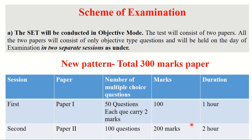In the first paper: 100 marks, 50 questions, each question carries two marks. In the second paper: 100 questions, 200 marks. Previously the total marks for the state exam was 350, but now the total paper will be 300 marks. This is the most important change in the pattern for the Maharashtra SET exam.